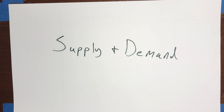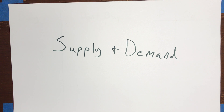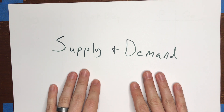Hey Econ 200, this week we're going over chapter 3 of the textbook, which is on supply and demand. Those three words — supply and demand — might be the most famous words in all of economics. Even people who have never taken an econ class are familiar with the phrase, but most people who haven't taken an economics course couldn't really define supply and demand or tell you what those concepts mean in the context of economic analysis.